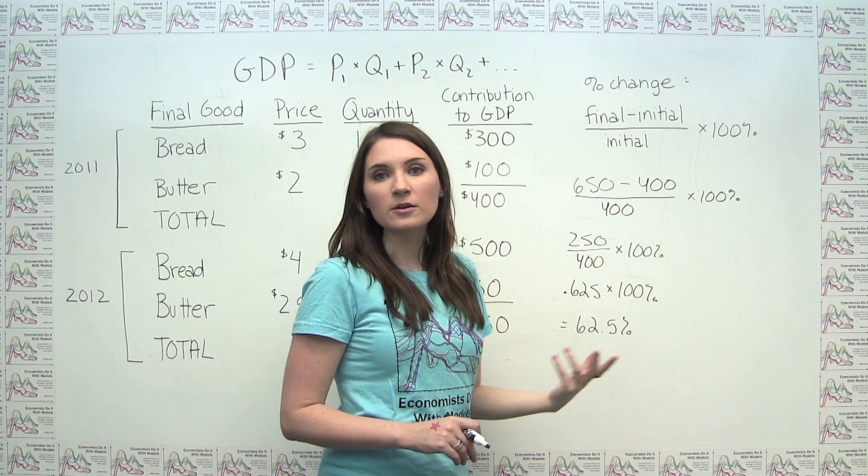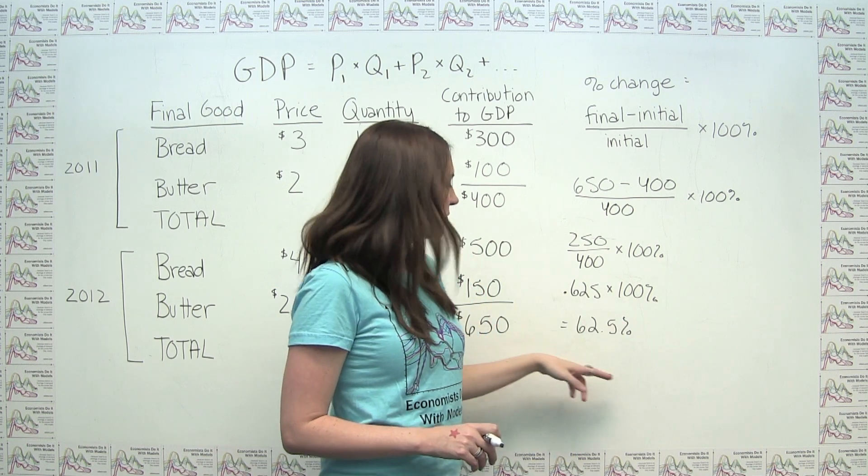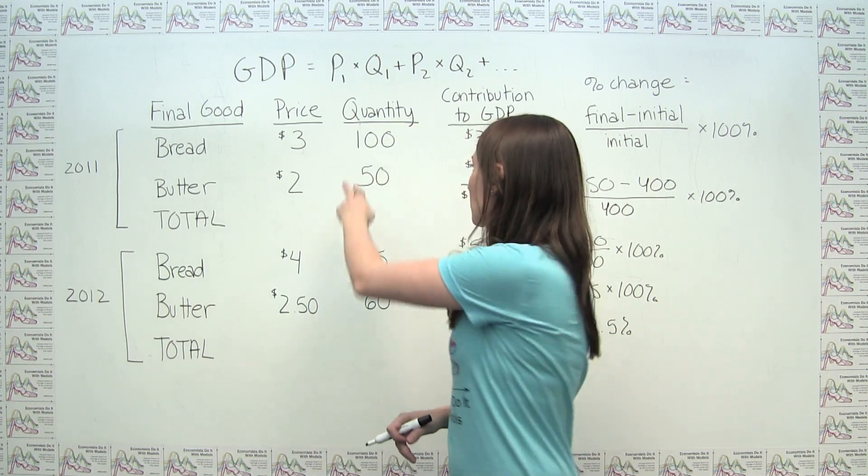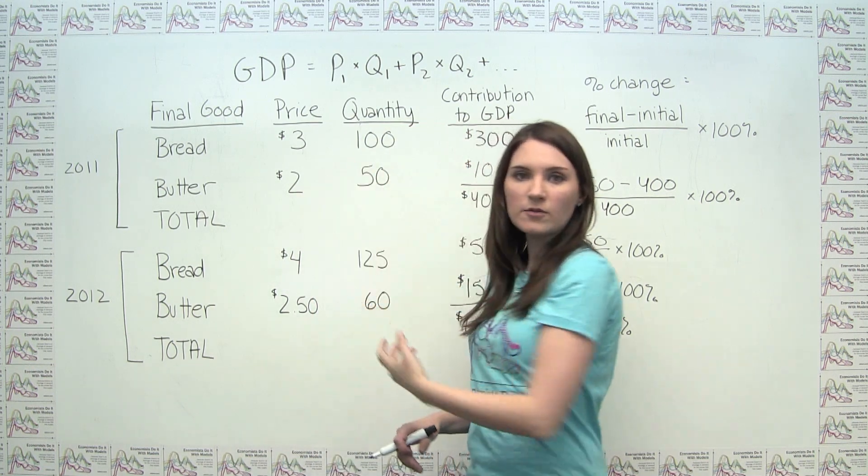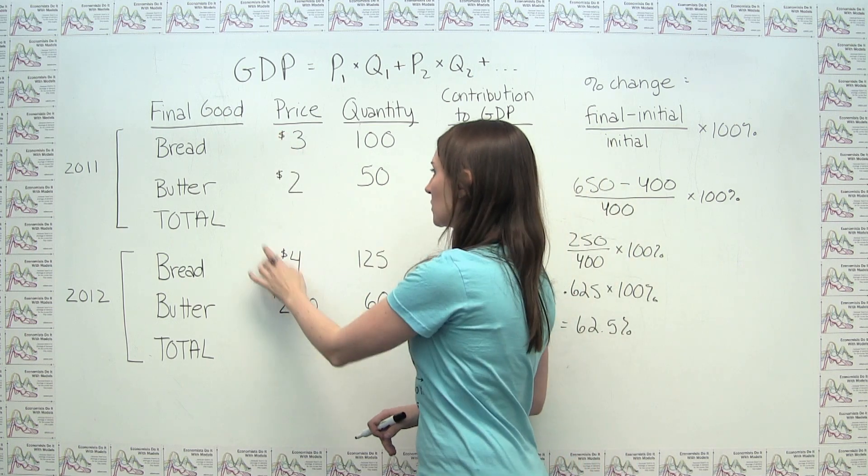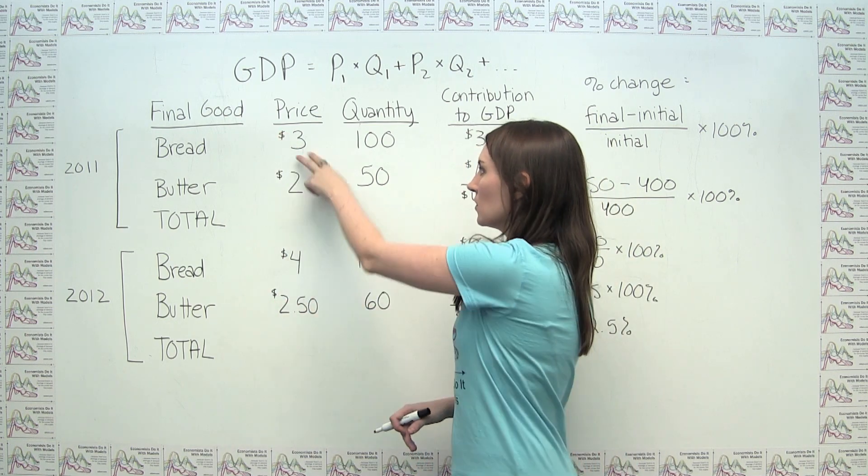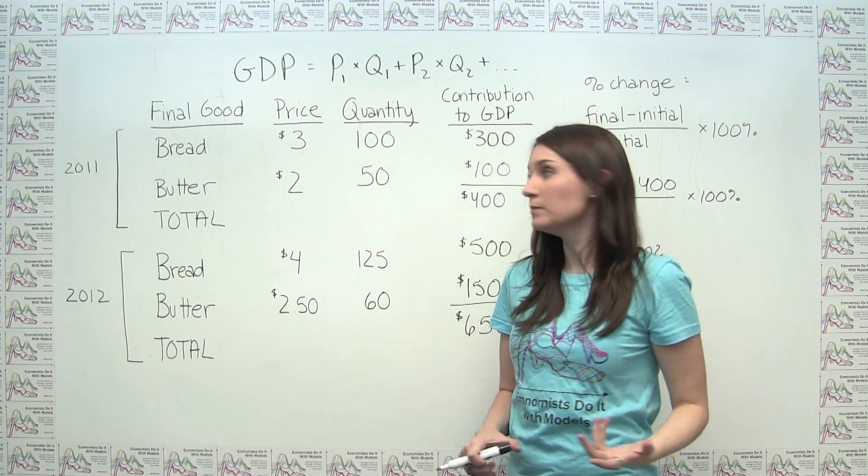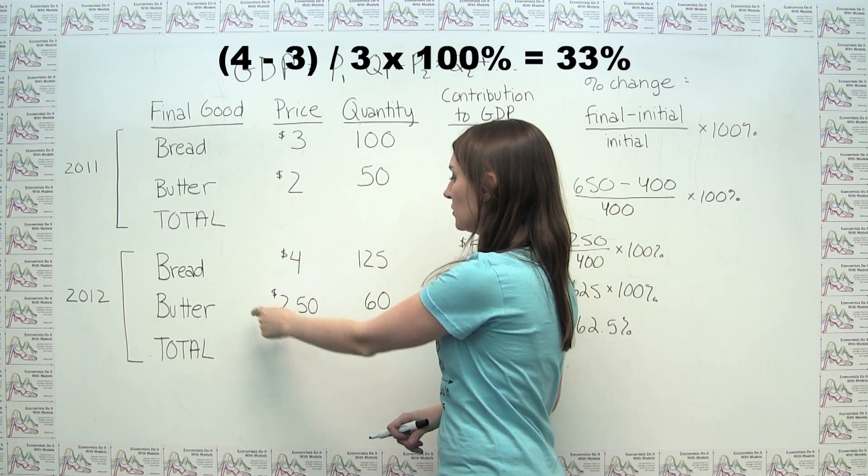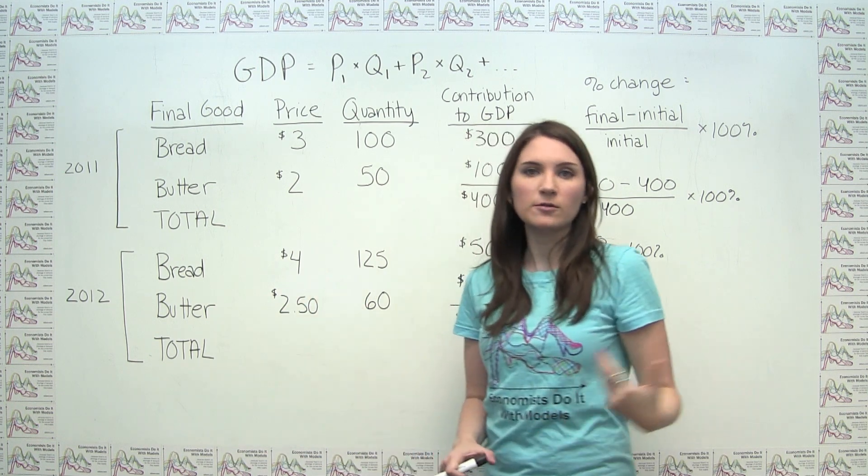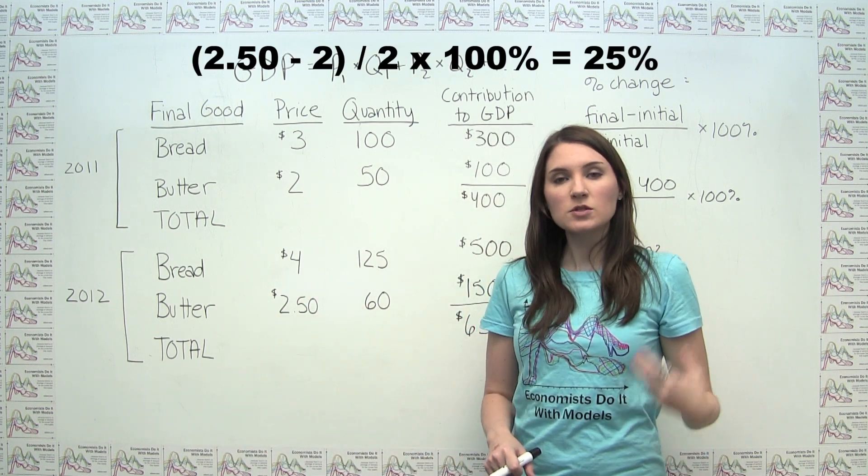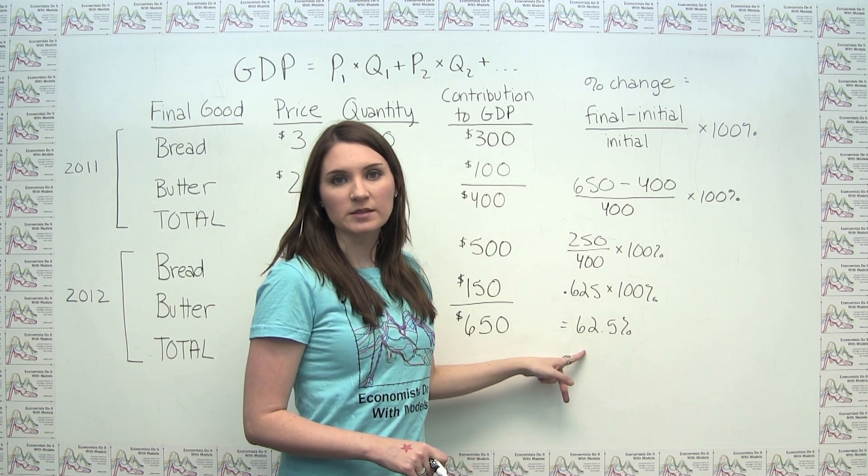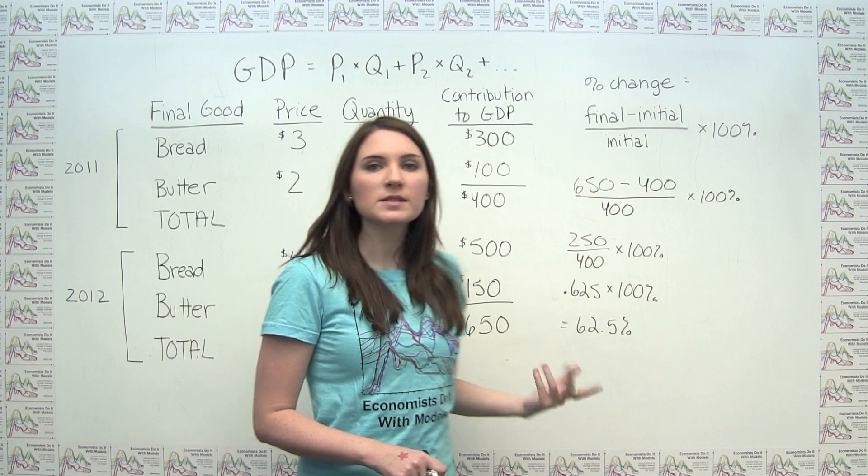As it turns out, the changes in prices reflect the rest of what we have going on here. So we'll notice that not only did the quantities of the goods we're producing go up, but the prices for those goods went up as well. We can see a change of $3 to $4 is a change of 33%, and the change from $2 to $2.50 is a change of 25%. So that's accounting for the rest of this overall 62.5% change.